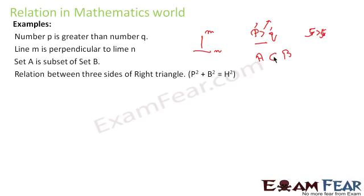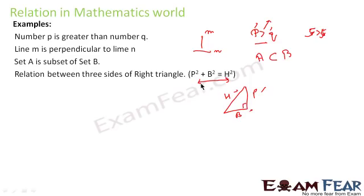One more example: in a right triangle we have P, B, and H. According to the Pythagorean theorem, P² + B² = H². This is also a relationship between P, B, and H. It involves three identities and there is a pattern: P² + B² = H². These are some examples of relations.